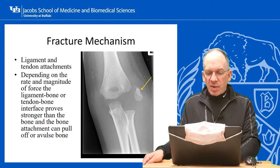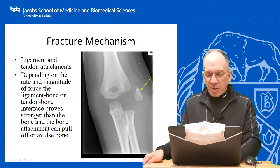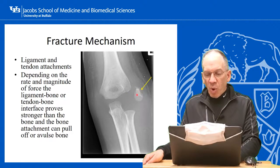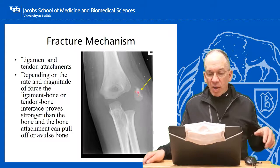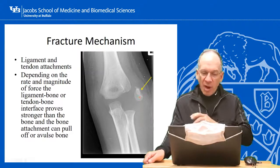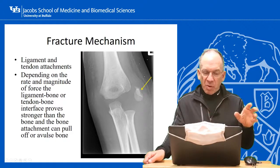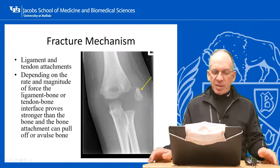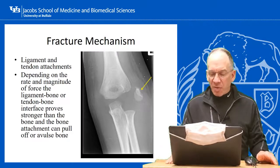In this case it's an epicondylar fracture where the soft tissue attachment to the bone was stronger than the attachment of the bone through the growth plate, so it gets pulled off. That's known as an avulsion fracture.